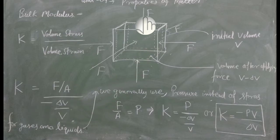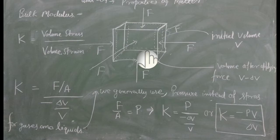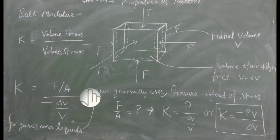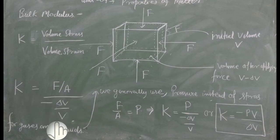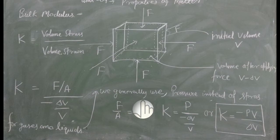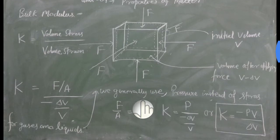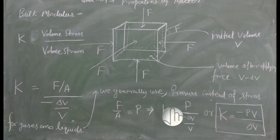Volume stress ہوگا F upon A — جو بل لگ رہا ہے فی یونٹ چھتر پر اتپن ہونے والا پرتیان بل۔ اب ہمیں پتا ہے کہ جو پرتیان بل ہے وہ آروپ بل کے ہی برابر ہوتا ہے لیکن opposite direction میں ہوتا ہے۔ یہاں پر significant term ہوتی ہے pressure، کیونکہ جب pressure اور stress کی بات کرتے ہیں تو ان کی definition ایک جیسی ہی ہوتی ہے — بل بٹا چھتر۔